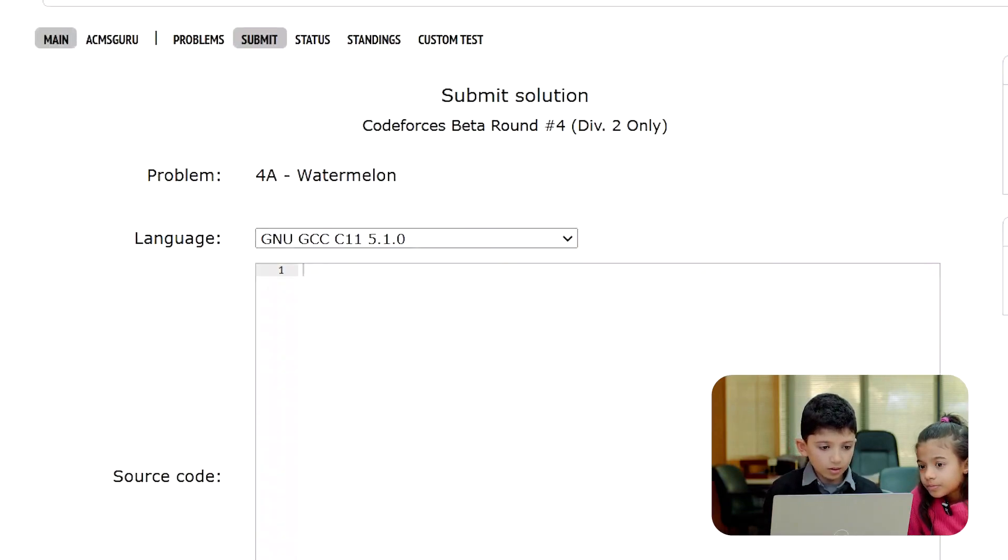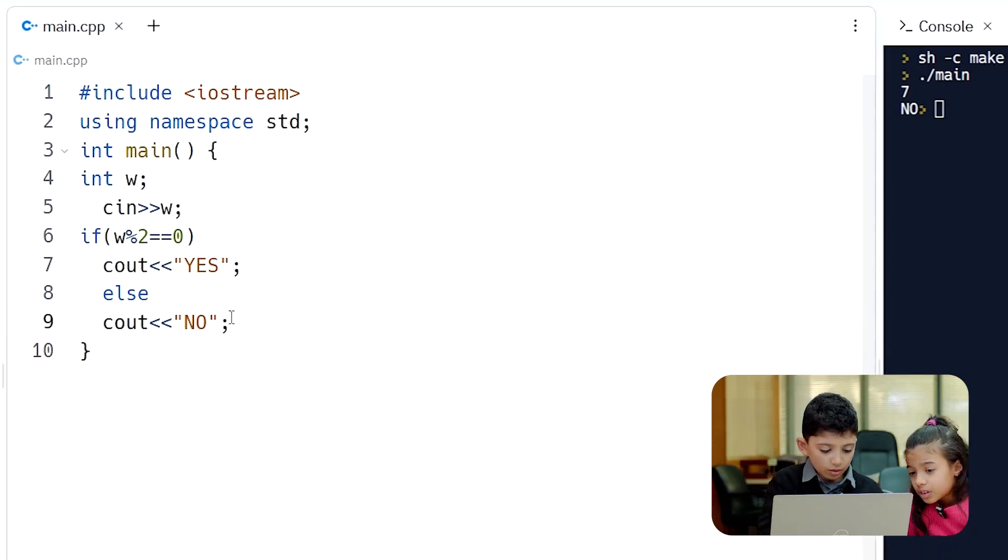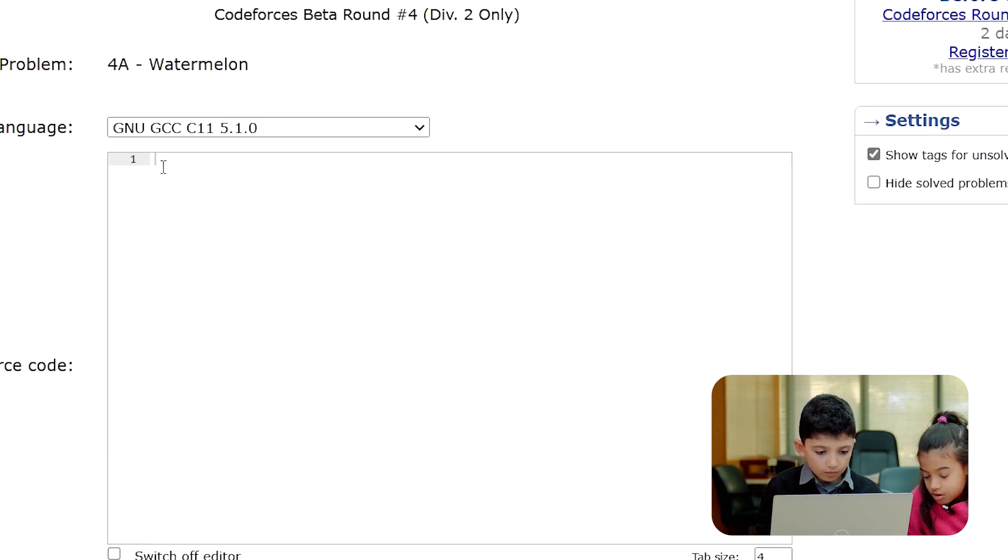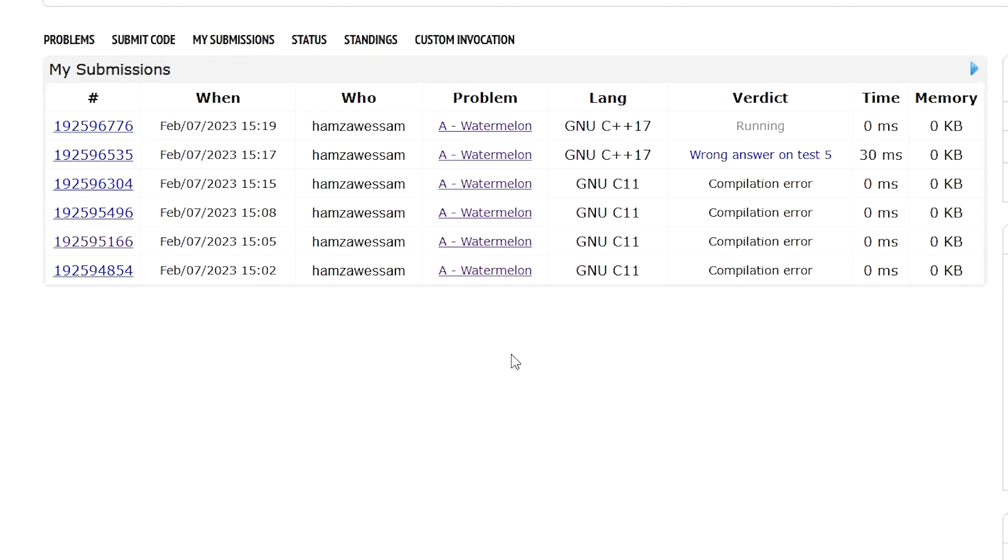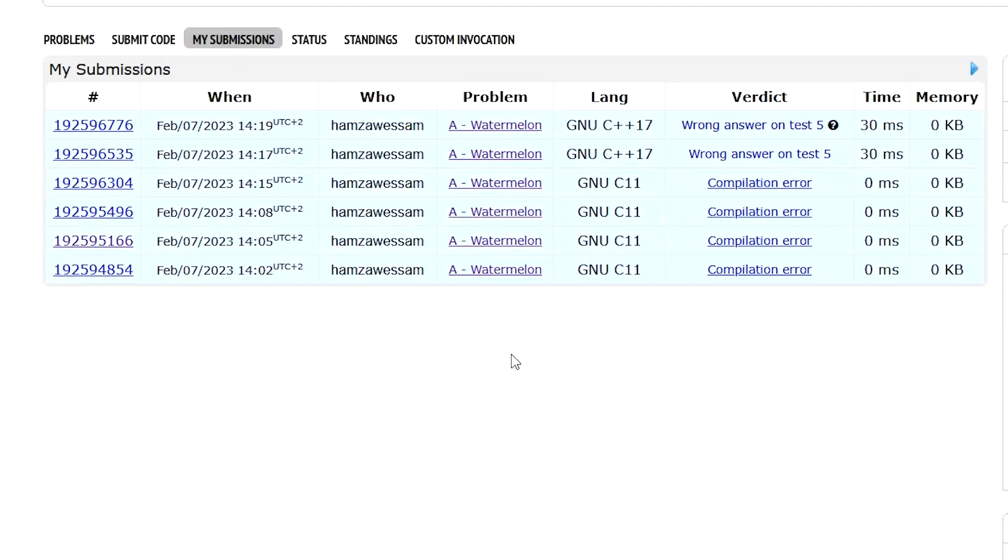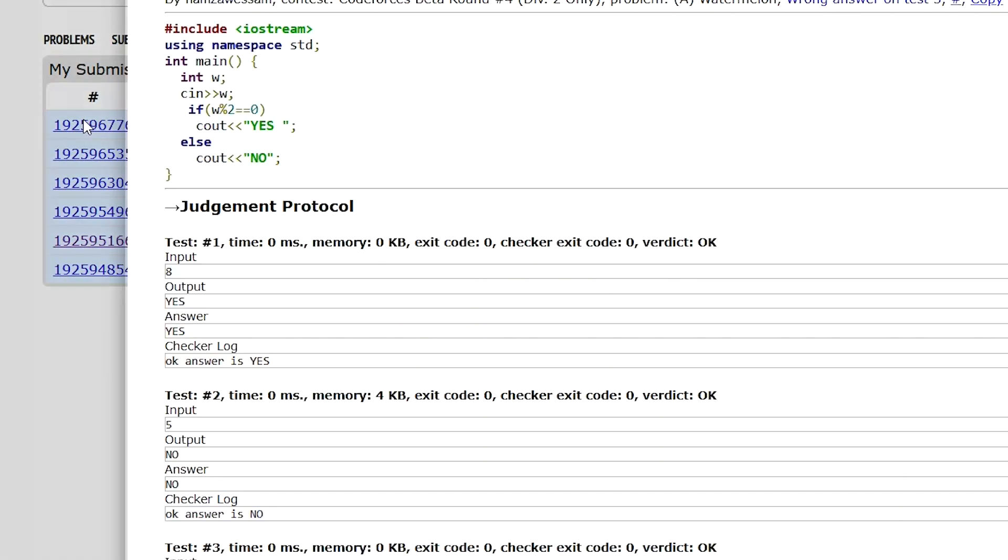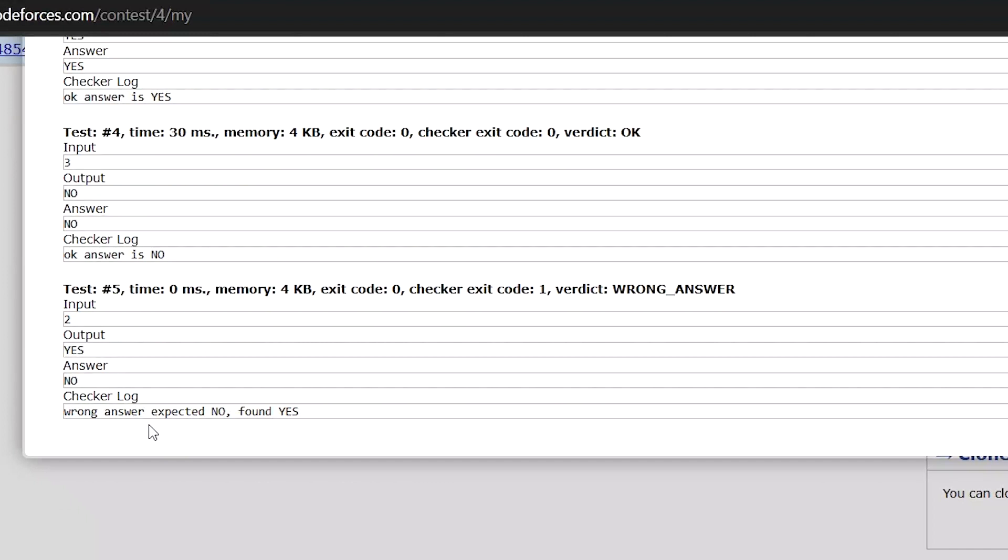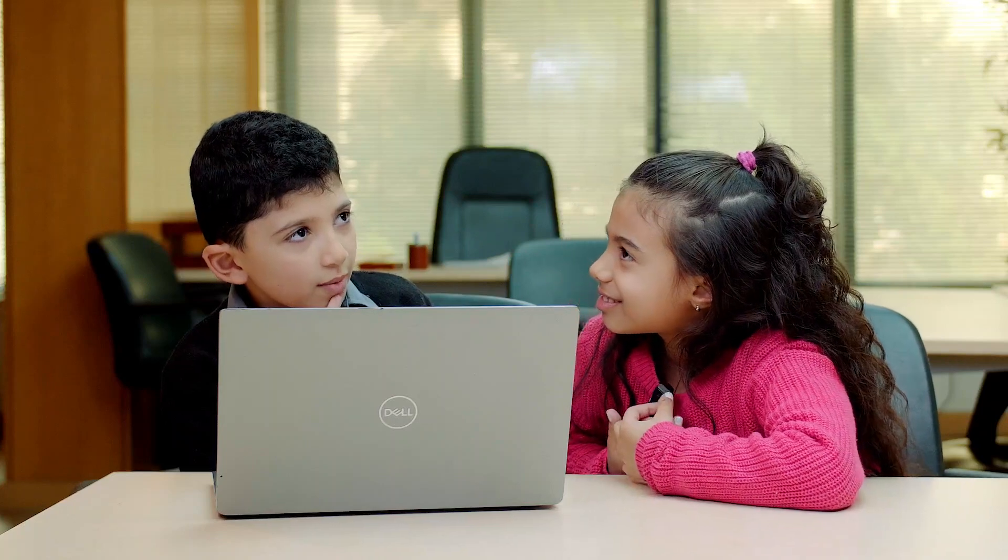Let me submit. We're going to do Control A, then Control C. Going to CodeForces, submit, Control V, and submit. Let's see what happens. Wait, what?